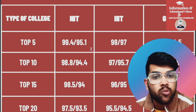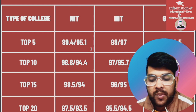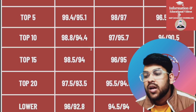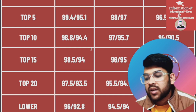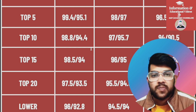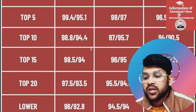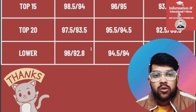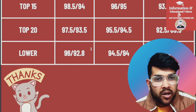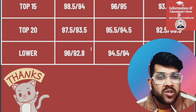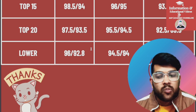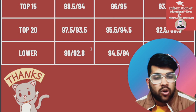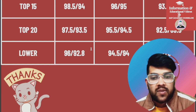For top 20 NITs: 97.5 and 93.5 percentile. For Triple IT: 95.5 and 94.5. For GFTI: 92.5 and 89.5 percentile. For the lowest possible NIT — CSE branch or lower branch — it is 96 and 92.8 percentile respectively. For Triple IT: 94.5 and 94. For GFTI: 92 and 88.5 percentile.